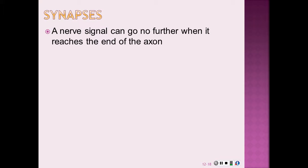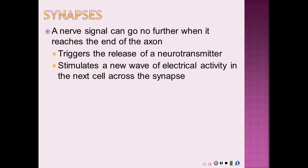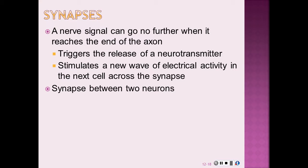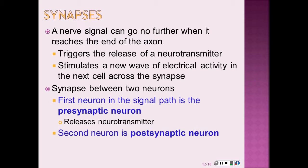We'll move on talking about synapses. A synapse exists at the end of an axon. In synapses between two neurons, the first neuron is the presynaptic neuron and the second is the postsynaptic neuron. The presynaptic neuron releases neurotransmitters, and the postsynaptic neuron is the one that responds to the neurotransmitter. These synapses trigger the release of neurotransmitters and stimulate a new wave of electrical activity in the next cell across the synapse.